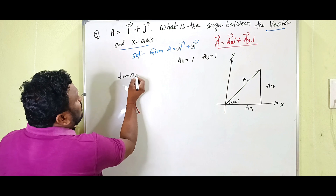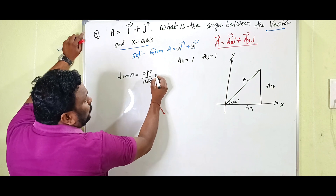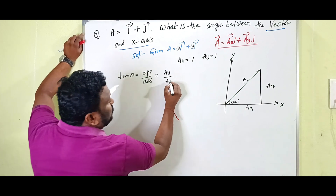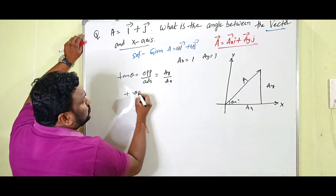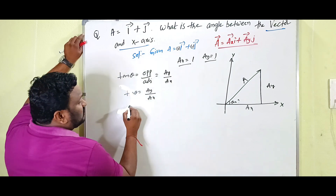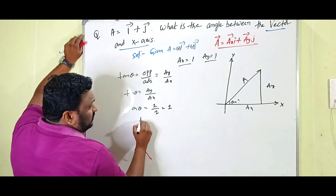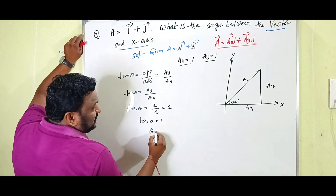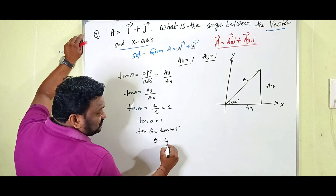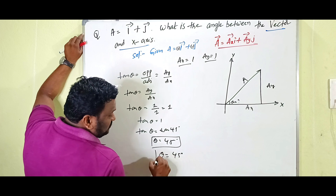From the diagram, tan θ equals opposite side by adjacent side, which is ay by ax. Since ay is 1 and ax is 1, tan θ equals 1 by 1, which equals 1. That means tan θ equals tan 45 degrees, therefore θ equals 45 degrees.